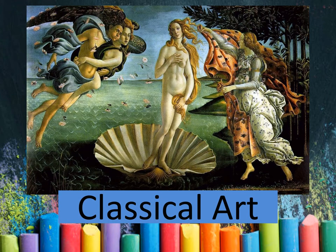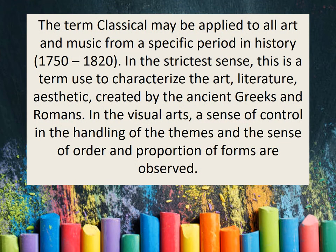Now, we're going to proceed to the discussion of classical art. The term classical may be applied to all art and music from a specific period in history, during 750 to 1820. In the strictest sense, this is a term used to characterize the art, literature, and aesthetic created by the ancient Greeks and Romans. In the visual arts, a sense of control in handling of materials and a sense of order and proportion of forms are observed.